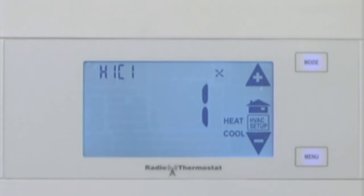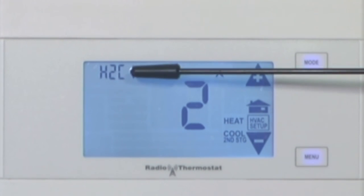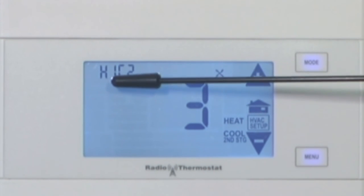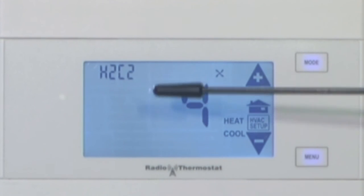So you basically have four choices: number one is one stage of each, number two is two stages of heat and one cool, number three is one stage of heat and two cool, and number four is two stages of each.